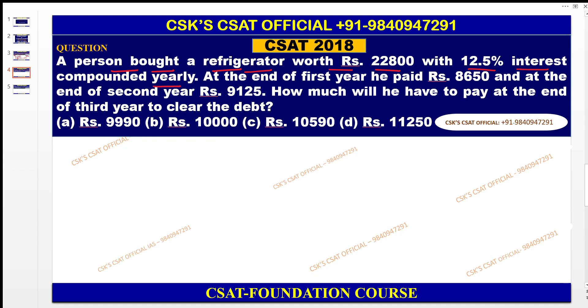A person bought a refrigerator worth rupees 22,800 with 12.5 percent interest compounded yearly. At the end of the first year he paid rupees 8,650; the second year he paid rupees 9,125. How much will he have to pay at the end of the third year to clear the debt?